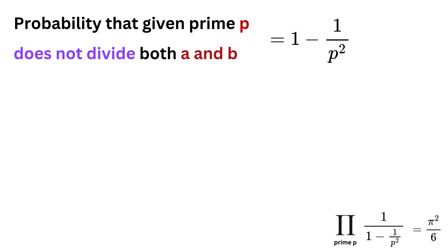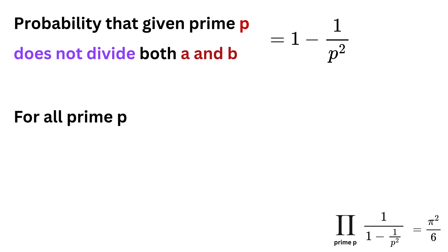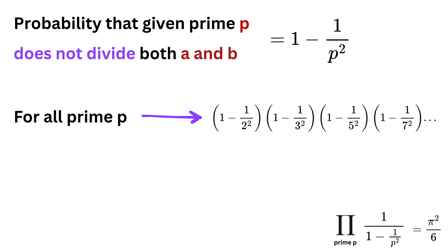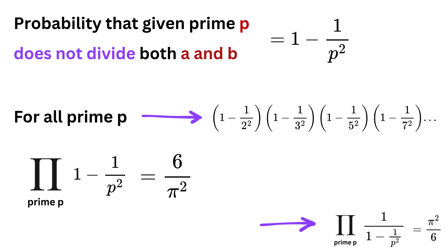For example, the probability that five does not divide both a and b is one minus one over five squared. To ensure this holds for all primes p, we multiply these probabilities over all primes, giving the total probability as the product over all primes of one minus one over p squared. We have already found this product, so taking the reciprocal gives the probability as six over pi squared. And that's it!